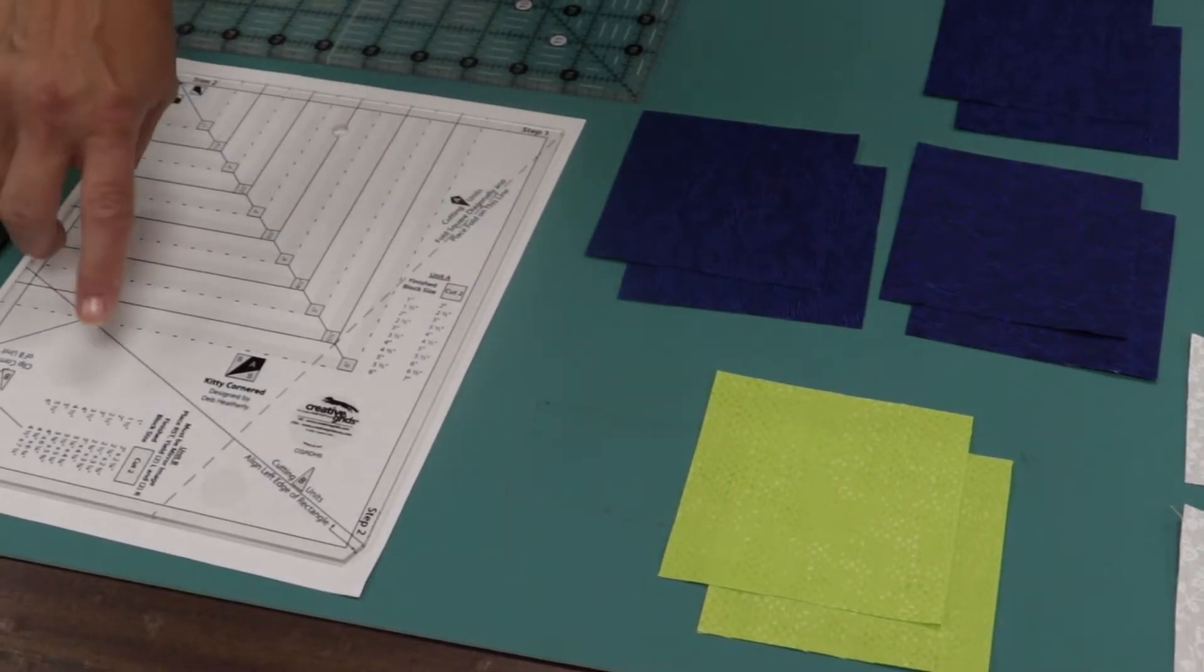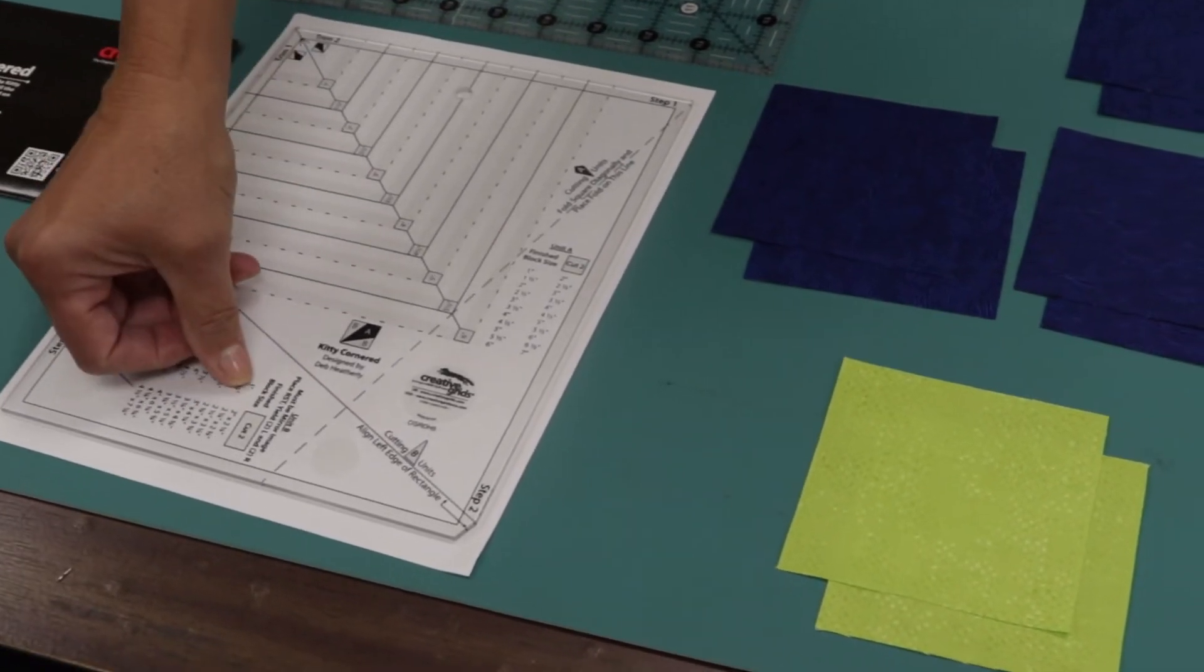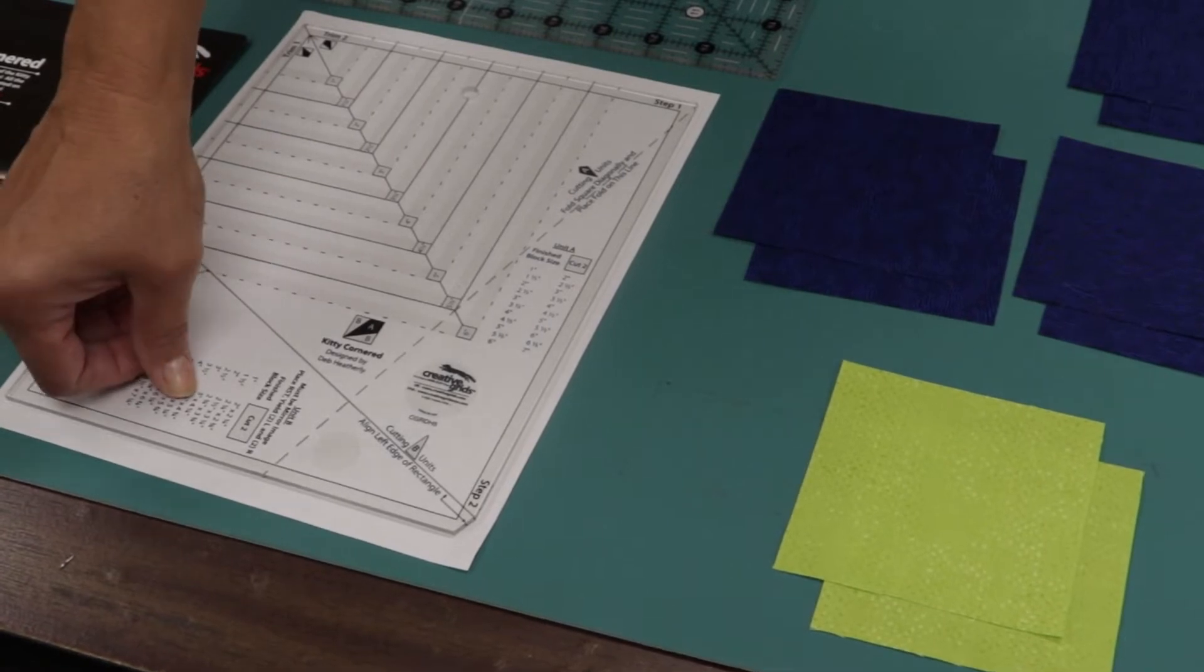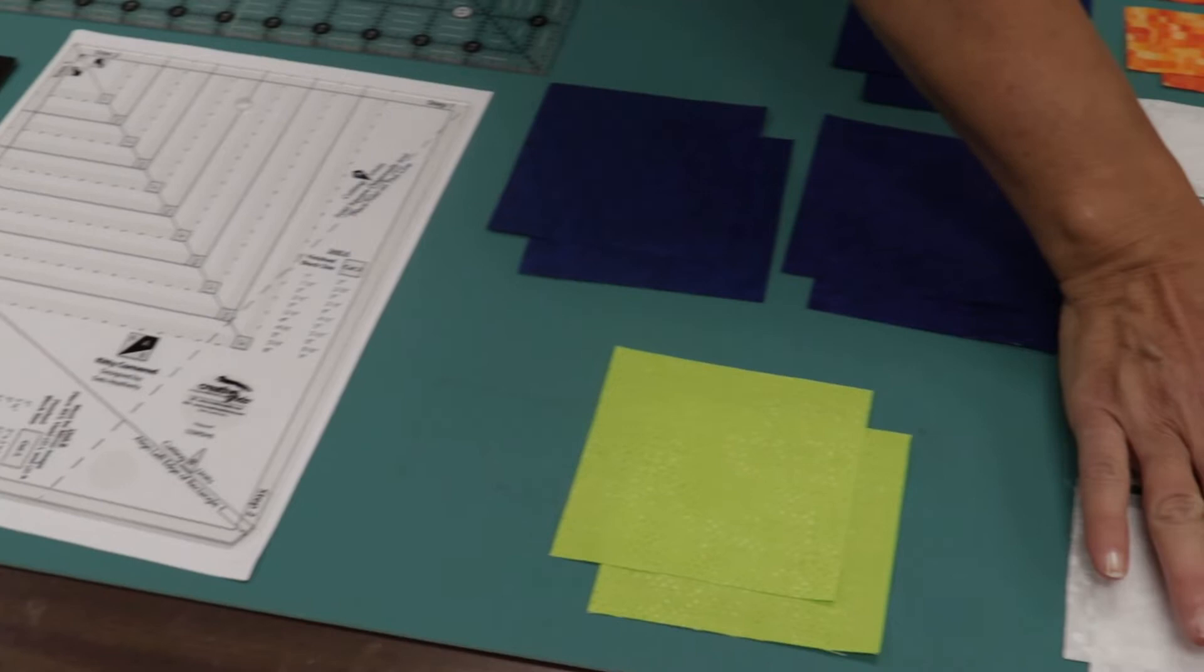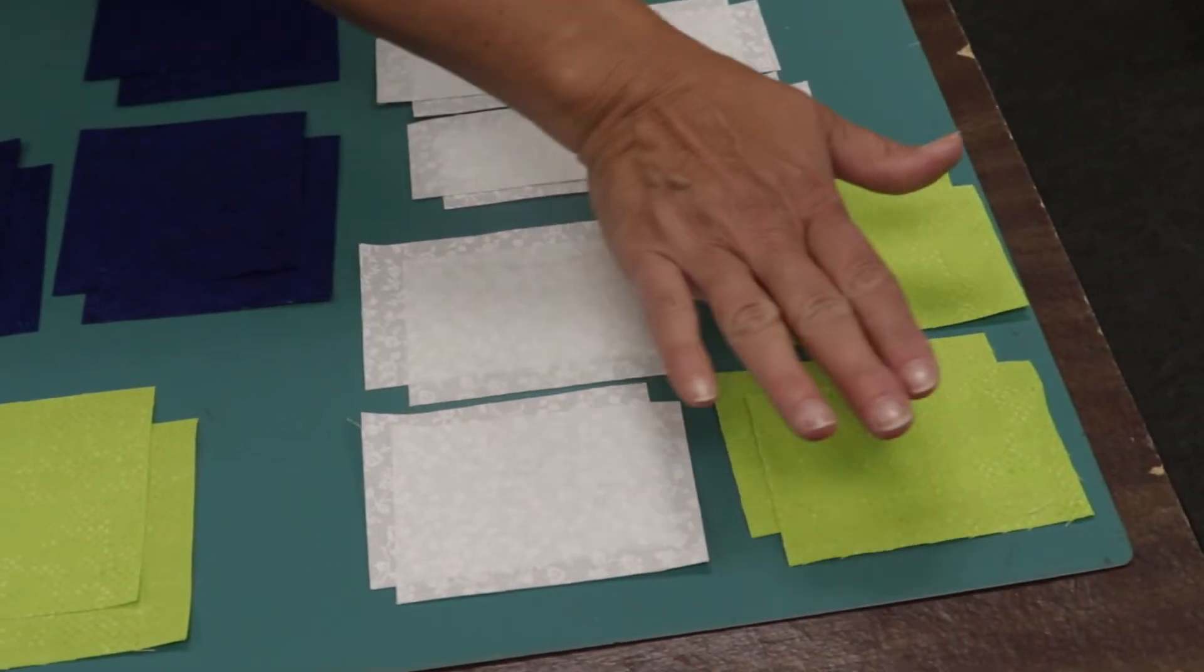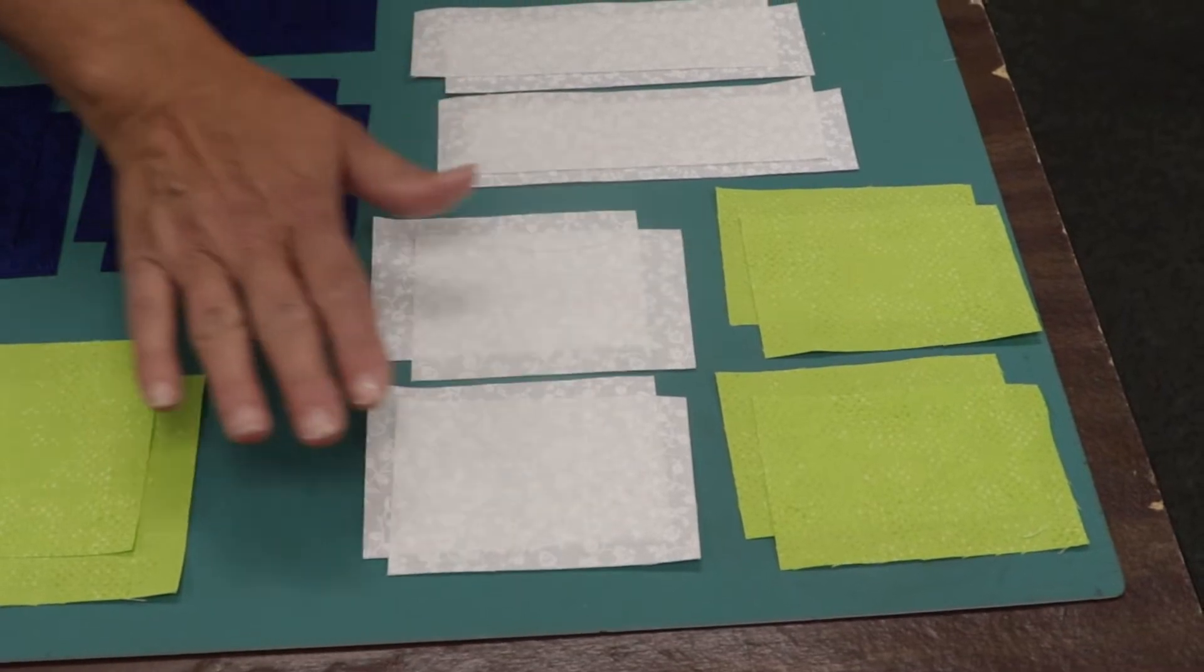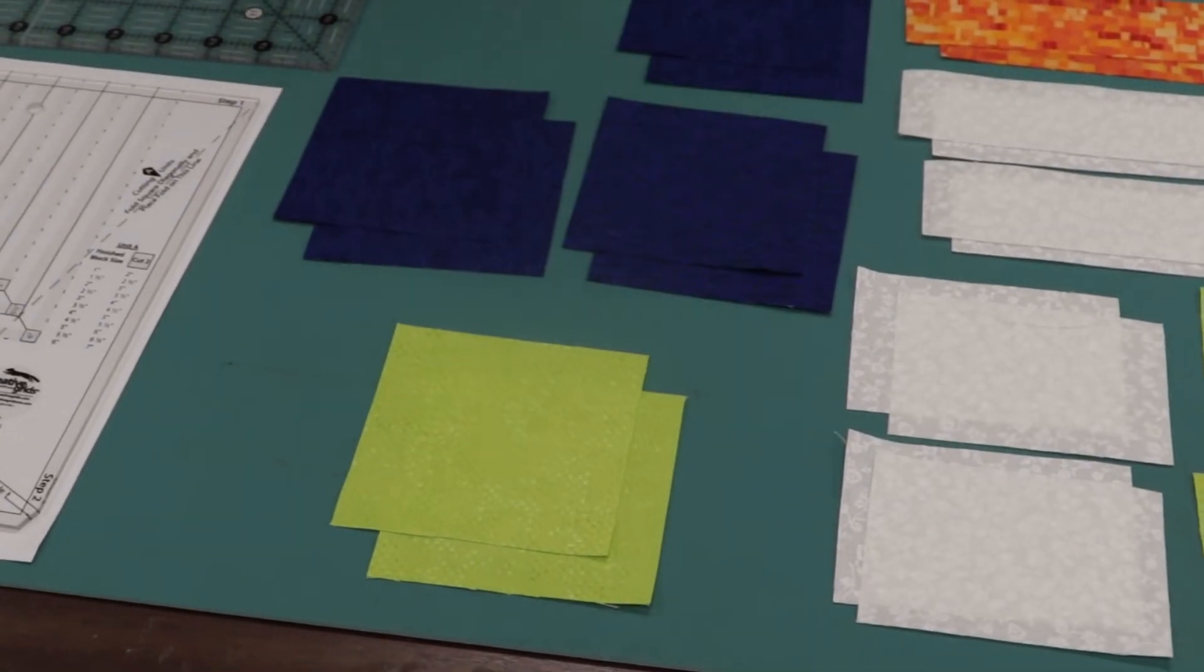The B units are made out of rectangles. So again, you look for the finished block size. Ours is 3. And we know to cut 3 by 4¼, which I gave you in your directions. So our rectangles are here. Remember, we needed greens and whites. And our A units are blues and greens. So let's get started.